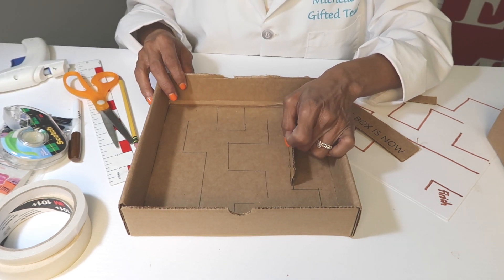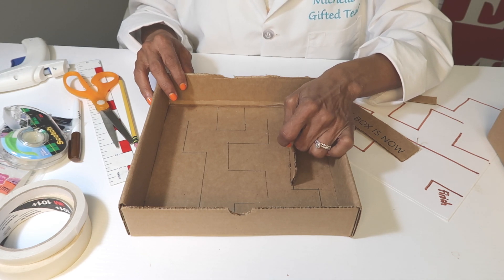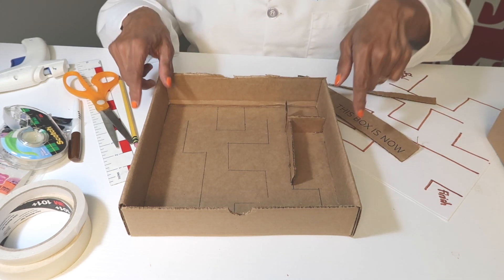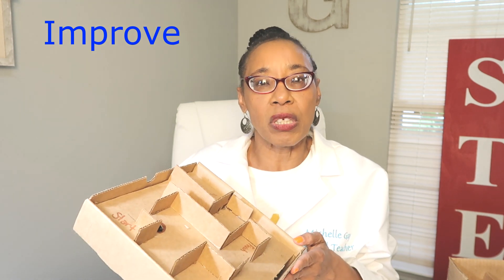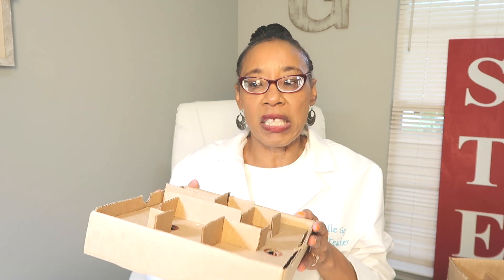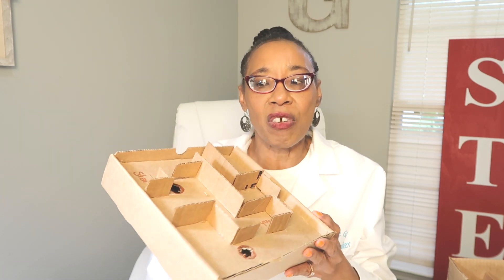Once you get all the walls completed, then it is time for you to test out your maze to see if you can get to the finish line, and then let someone else test it out. Now that you've built your maze, I want you to leave me a comment on how you came up with your design and if it worked. Now once you make your design and you see that it needs some improvement, that's the last step to the engineer design process — you can go back and make improvements. Your first one we call a prototype. If the prototype does not work or it needs fixing, then it's time to go back to the drawing board, plan, and decide your improvements.